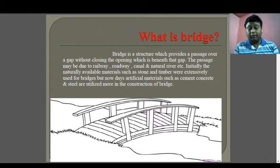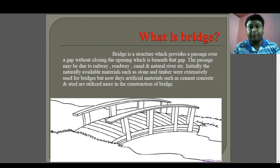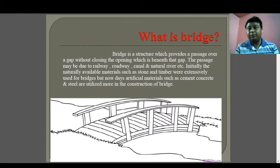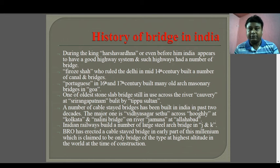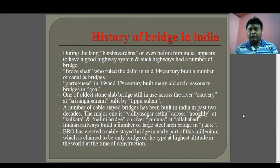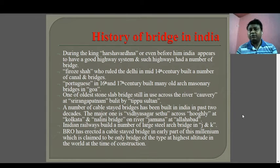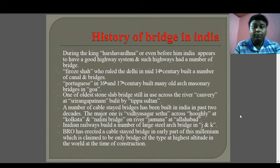Initially, naturally available materials such as stone and timber were extensively used for bridges, but nowadays artificial materials such as cement concrete and steel are used. The history of bridges spans from ancient times — from Harsha or even before him — to the Border Roads Organization (BRO), which is the main body responsible for construction of road-side construction. There are various types of bridges; if you are from Kolkata, you know the Howrah Bridge and the Hooghly bridges.